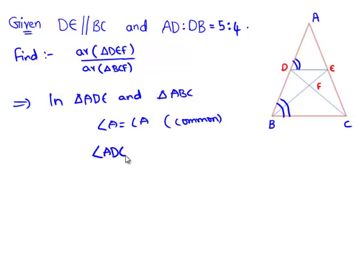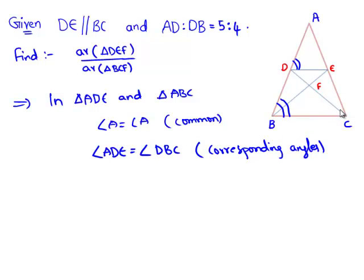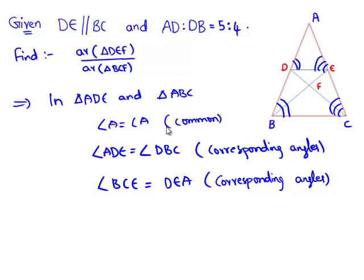Therefore, angle ADE is equal to angle DBC as they are corresponding angles. Similarly, we have another pair of corresponding angles: BCE and its corresponding angle DEA, so these two must be equal. By angle-angle-angle similarity, we say that triangle ADE is similar to triangle ABC.